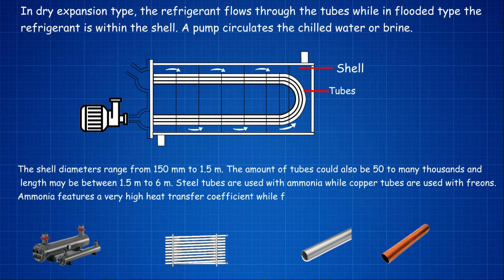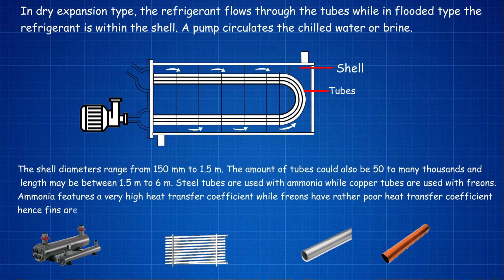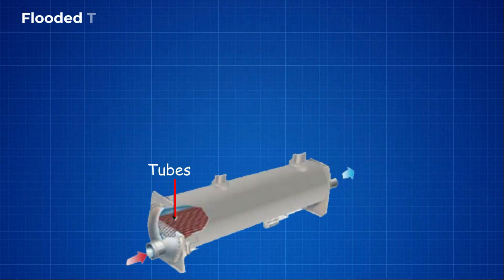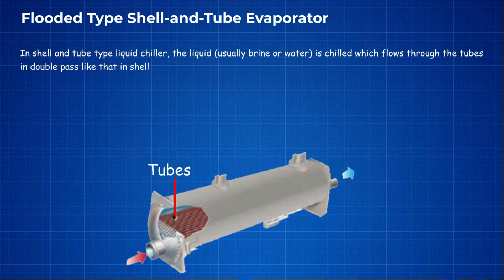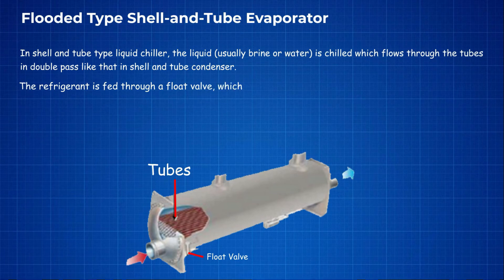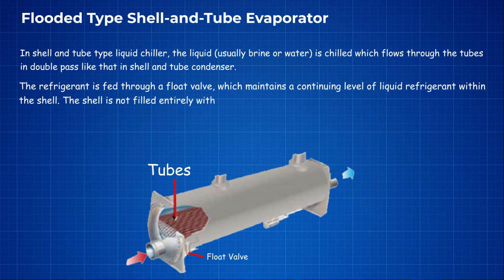Ammonia has a very high heat transfer coefficient while freons have a rather poor heat transfer coefficient, hence fins are used on the refrigerant side. In the flooded type shell and tube evaporator, the liquid — usually brine or water — is chilled as it flows through the tubes in a double pass, similar to a shell and tube condenser. The refrigerant is fed through a float valve which maintains a constant level of liquid refrigerant within the shell, which is not filled entirely with tubes.